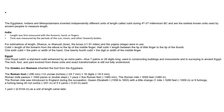They also used the cubit unit, which is the length of the forearm from the elbow to the tip of the middle finger. Subsequently, half a cubit is the length between the tip of the thumb to the tip of the little finger, one-sixth cubit was the palm of the hand, and one twenty-fourth cubit was the digit or width of the middle finger.